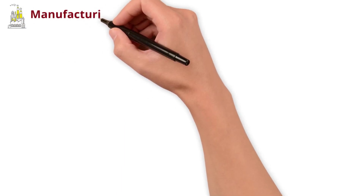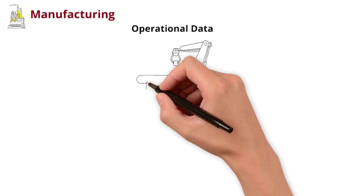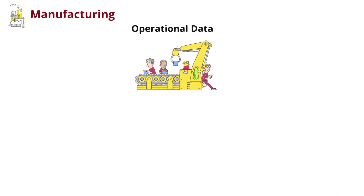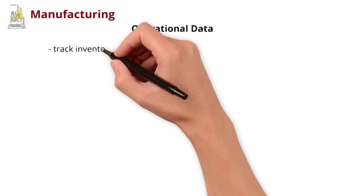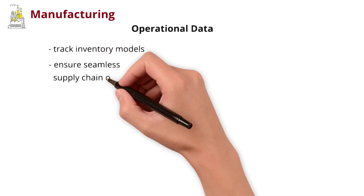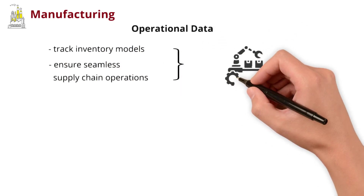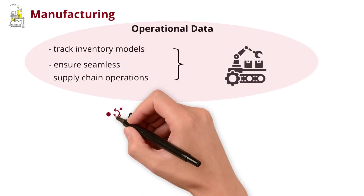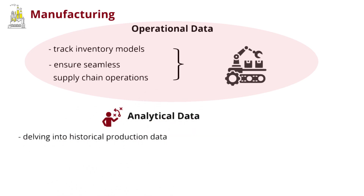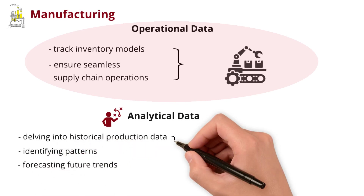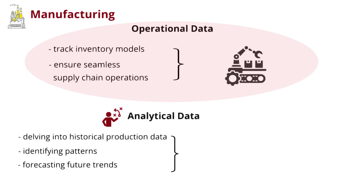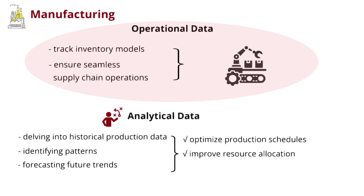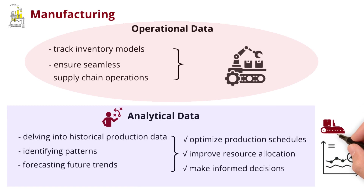In the dynamic manufacturing realm, operational data is the backbone orchestrating real-time production processes. It tracks inventory levels and ensures seamless supply chain operations — the driving force behind the efficiency of day-to-day manufacturing activities. Meanwhile, analytical data becomes the strategist, delving into historical production data, identifying patterns, and forecasting future trends. This analytical approach aids in optimizing production schedules, improving resource allocation, and making informed decisions for overall operational enhancement.